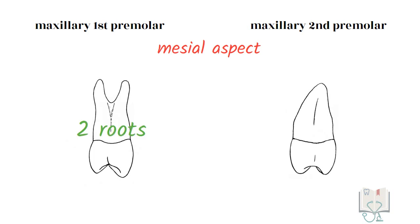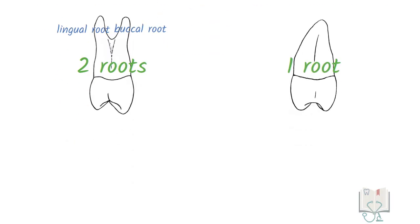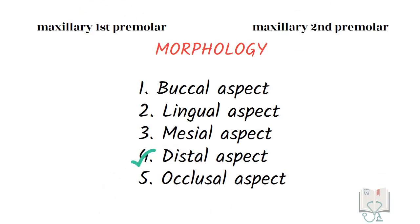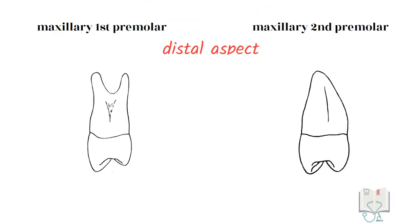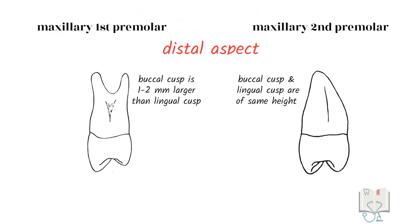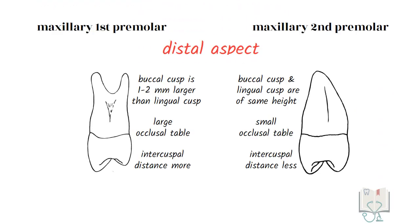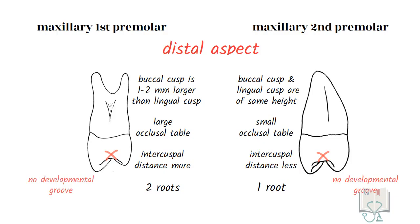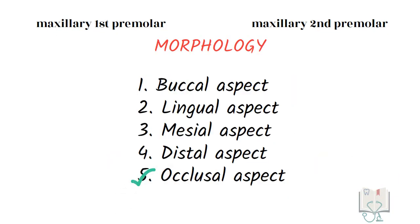Coming to the root from the mesial aspect, in the first premolar the root bifurcates into a buccal root and a lingual root, whereas there is a single root in the second premolar. Next, the distal aspect — all the differences seen from the mesial aspect are seen from the distal aspect as well, except for the developmental groove, which is absent in both teeth from this view.